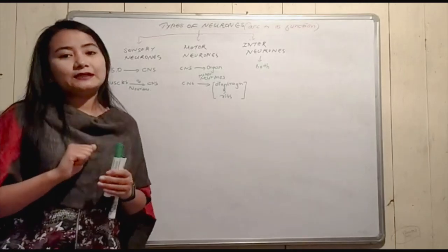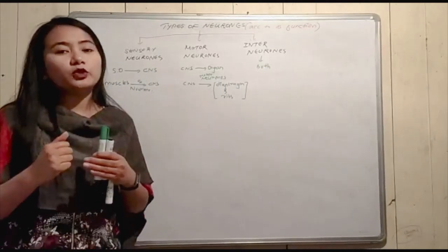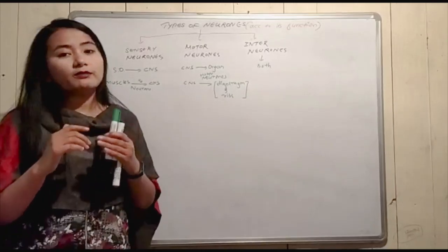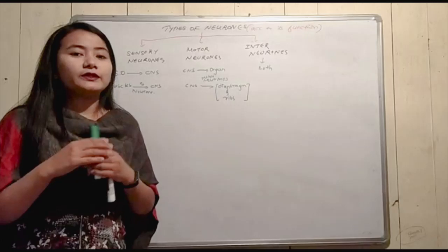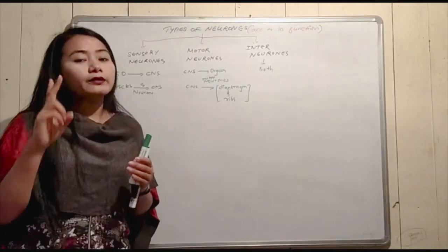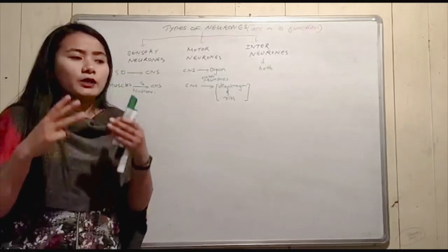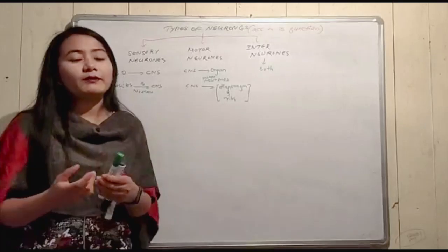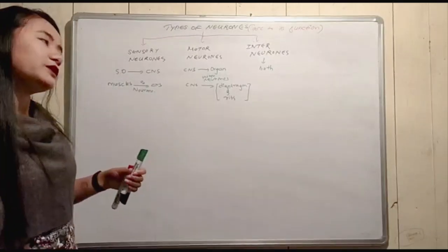Now we have three important related terms: neuron, nerve, and nerve fiber. It is important to understand the inter-relationship among these three terms — what is called a nerve, what is called a nerve fiber, and what is called the inter-relationship between them.